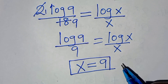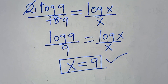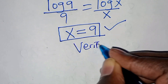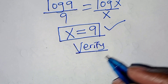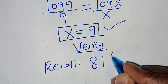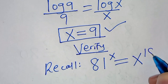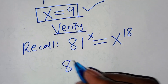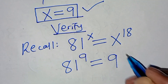By applying Method 1 and Method 2, whichever the case, we have that the value of x is equal to 9. Now let's verify that this value of x satisfies the equation. Recall we have 81 raised to the power x equals x to the power 18. Substituting x equals 9, we have 81 raised to the power 9 equals 9 to the power 18.